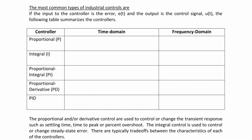The most common types of industrial controllers are proportional integral PI, PD, and PID. If the input to the controller is the error E(T) and the output is the control signal U(T), the following table summarizes the controllers. A proportional controller in the time domain just multiplies the error: U(T) equals the proportional gain KP times E(T), or in the frequency domain U(S) equals KP times E(S).